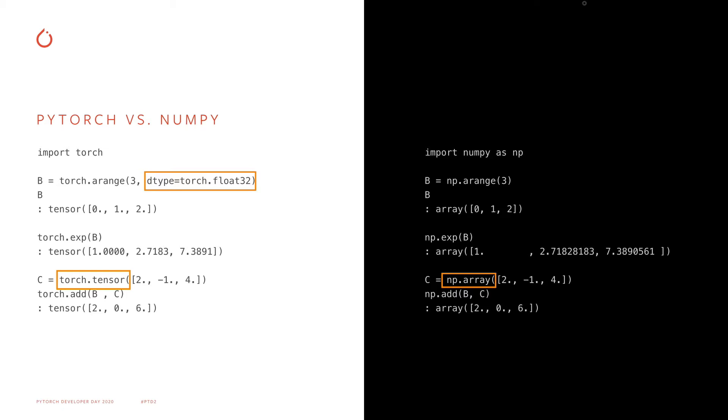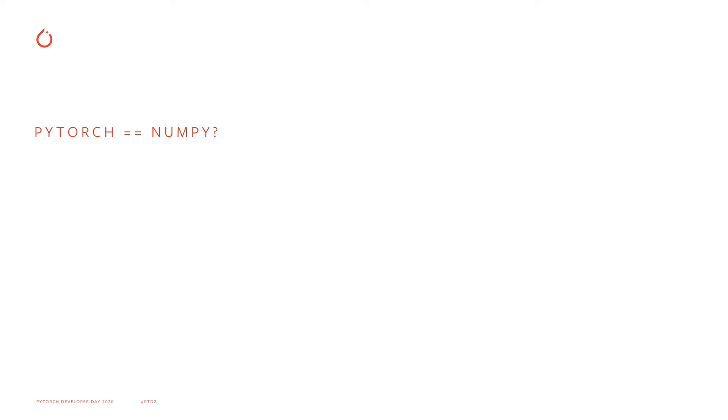In this snippet, we also see that PyTorch is a little more explicit about data types, requiring that the tensor B be specified as containing floating point values before the exponential function can be called on it. Now, we might think that the goal of NumPy compatibility is to eliminate all differences between PyTorch and NumPy, but that's actually not the case.